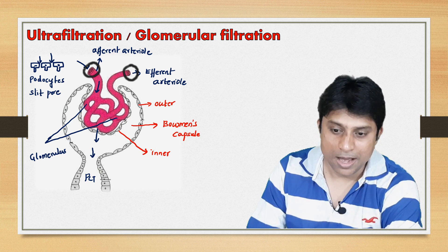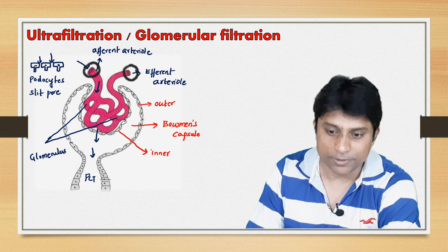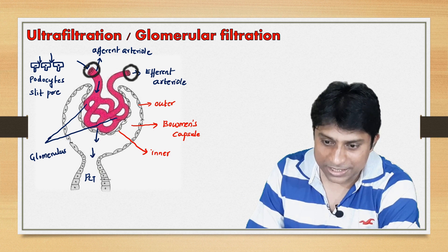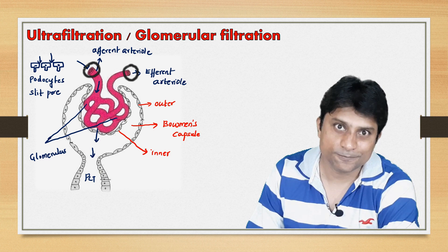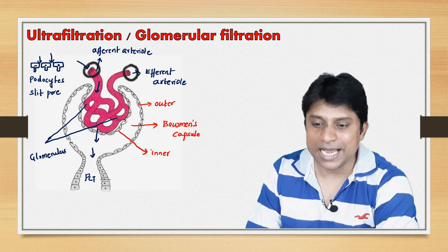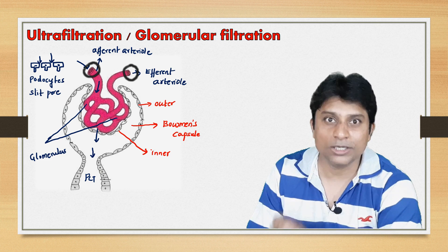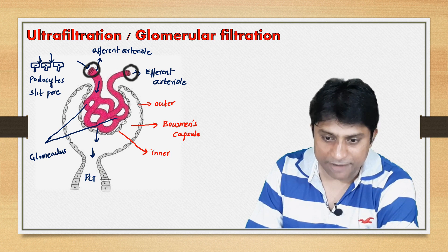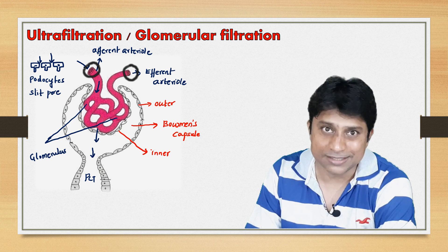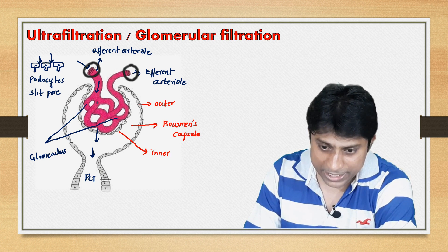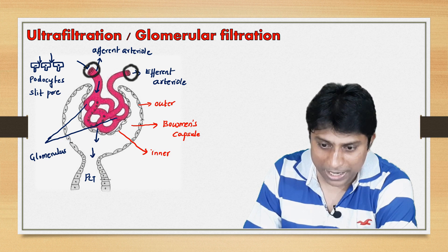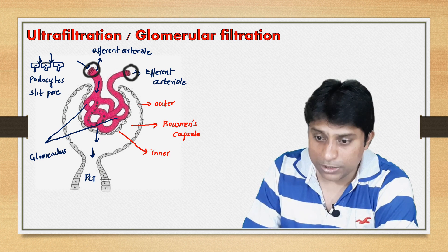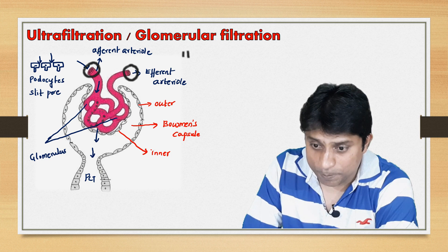Also, an artery is ending with an artery — the efferent arteriole leaves as an arteriole. This is one more reason for the pressure inside the glomerulus. So, the blood flowing inside the glomerulus is under pressure, and that is called the hydrostatic pressure of blood.